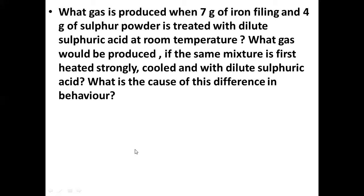Hydrogen sulphide. Hydrogen sulphide is produced when the mixture of iron and sulphur is heated strongly, then cooled, and then treated with dilute sulphuric acid.